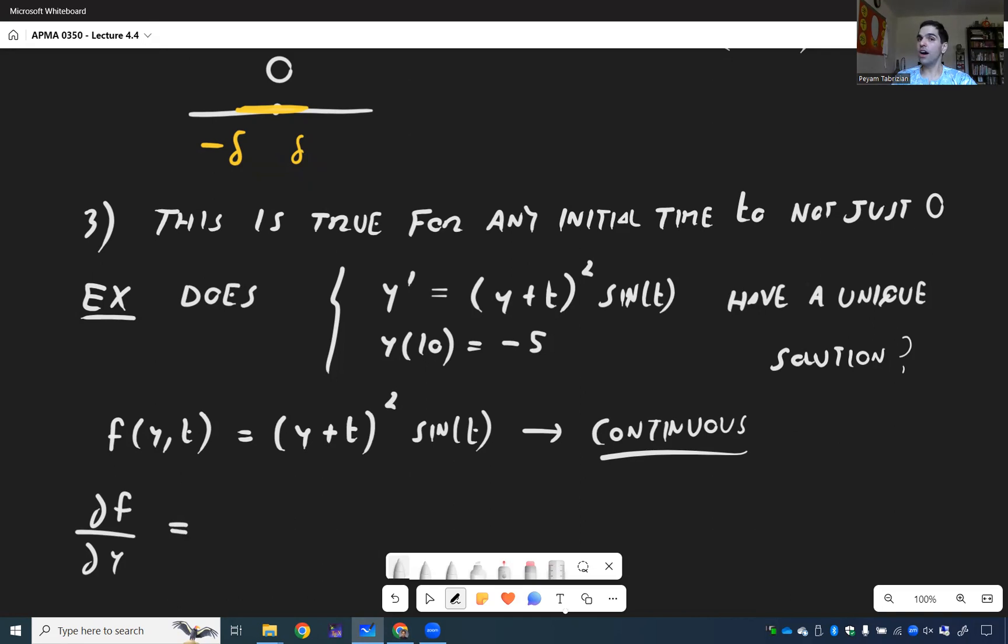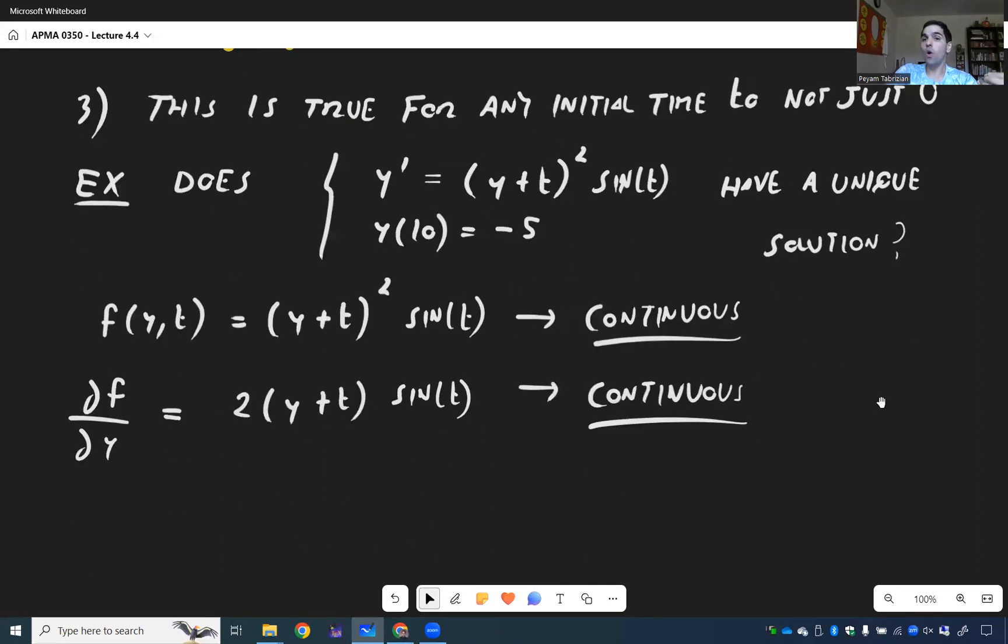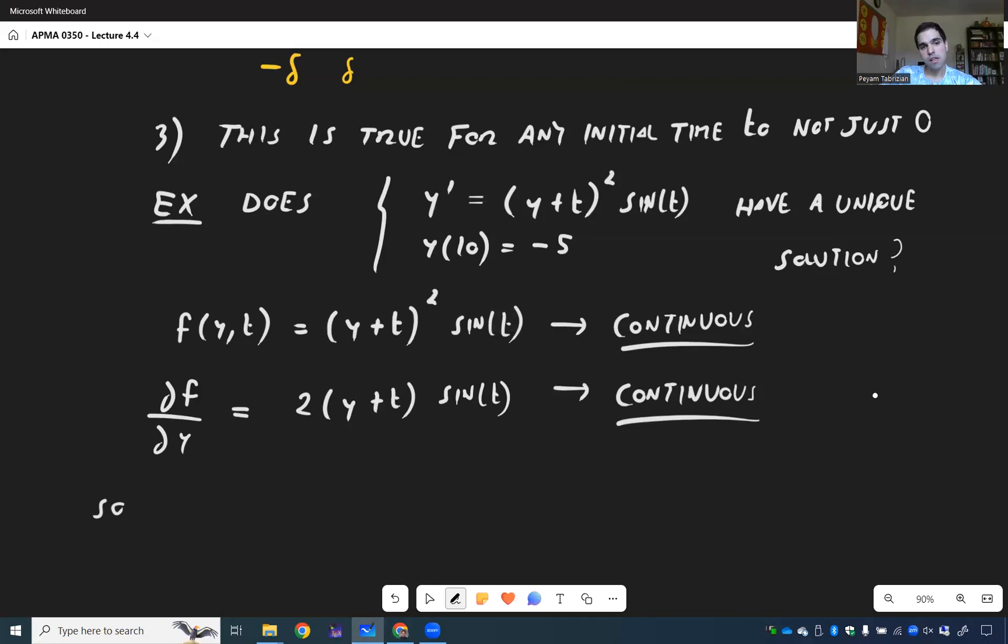Meaning you just treat t as a constant and differentiate with respect to y. So by the chain rule, this is 2 times y plus t times sin(t), which is also continuous. And so by the ODE existence uniqueness theorem, the answer is yes. But again, not for all time, as we've seen, at least some short time around t equals 10.